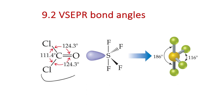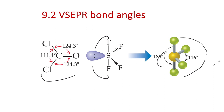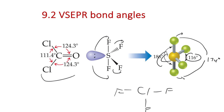The lone pair repulsions in SF4 push the axial fluorines closer together — those bond angles are about 174 degrees rather than 180 — and push the equatorial fluorines closer together to a little less than 120 degrees. For ClF3, the two lone pairs on the equatorial positions push the bond pairs closer together, so the bond angles are a little less than 90 degrees, reduced from the 90 degrees expected for perfect trigonal bipyramidal domain geometry.